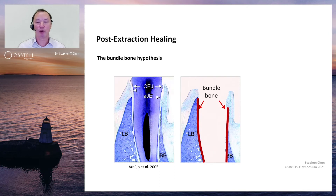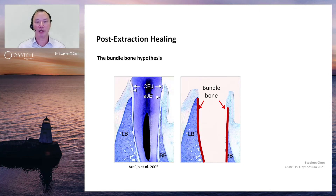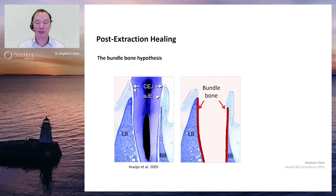This bundle bone occupies a space of about 0.5 millimeters around that cortical bone that confines itself to the socket itself. So when the tooth is taken out and the bundle bone no longer has a reason to exist because it no longer supports the tooth, the body naturally resorbs this bundle bone away.